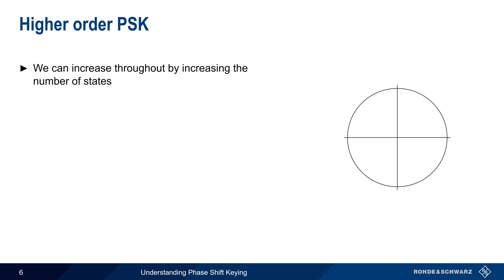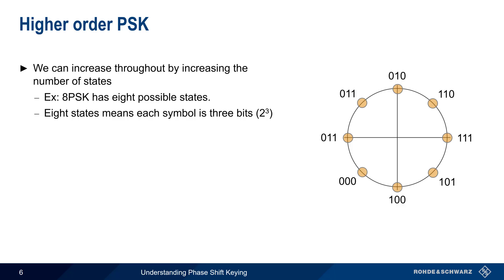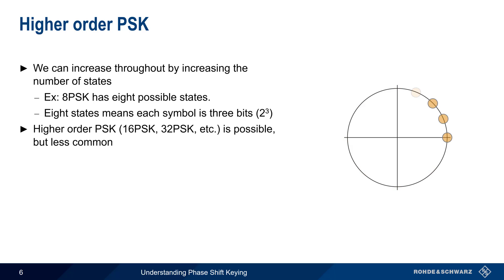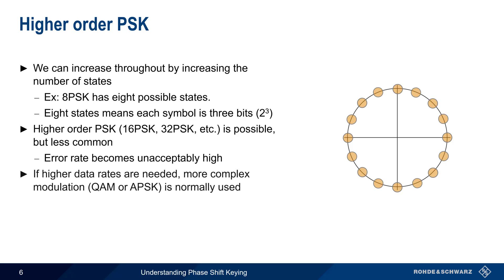We can further increase throughput by increasing the number of states. For example, 8PSK has eight possible states, and this in turn means that we can send three bits per symbol. Orders higher than 8PSK, such as 16PSK or 32PSK, are possible, but they're much less common in practice, primarily because the error rate becomes unacceptably high. The closer the states or points are together, the harder it is to generate or receive the symbols correctly. If higher data rates are needed, this is usually accomplished by using more complex modulation schemes, such as QAM or APSK, that combine both phase and amplitude modulation.